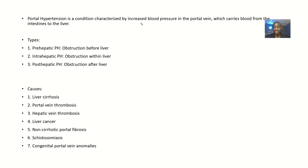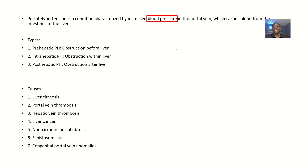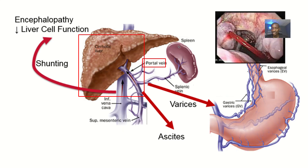Portal hypertension is a condition characterized by increased blood pressure in the portal vein — not a blockage, as I mistakenly said earlier. I'm leaving that mistake in intentionally so you never forget: there is increased blood pressure in the portal vein, which carries blood from the intestines to the liver.